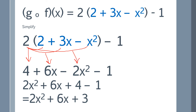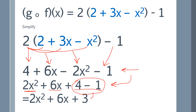Carry that minus 1 down. Now rewrite it with the x squared term first — that's just the proper way to write things. So you have negative 2x² plus 6x plus 4 minus 1. Combine the like terms: negative 2x² has no like terms, carry it down; 6x has no like terms, carry it down; and 4 minus 1 equals 3. So the answer is negative 2x² plus 6x plus 3.